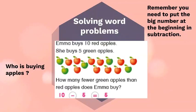Let's take a look at the question: how many fewer green apples than red apples does Emma buy? Now the word fewer, what does that mean? Less. So we are subtracting, and in subtraction you need to remember that the big number is at the beginning. So number ten is at the beginning. Ten take away the second number, which is five, equals five. Ten take away five is five.